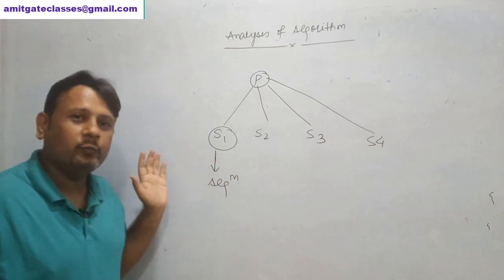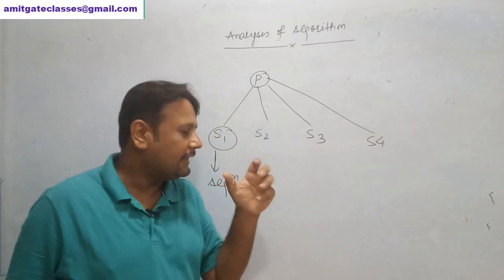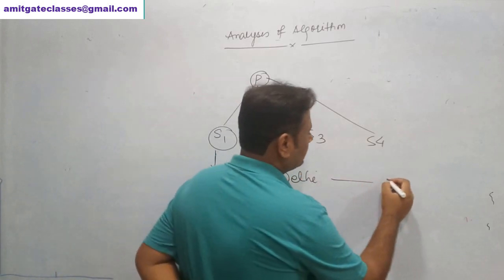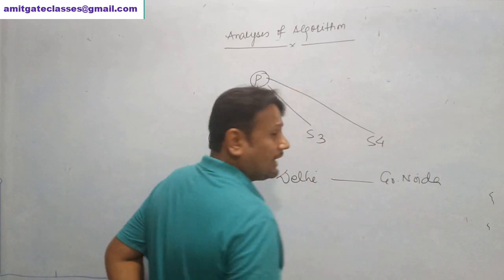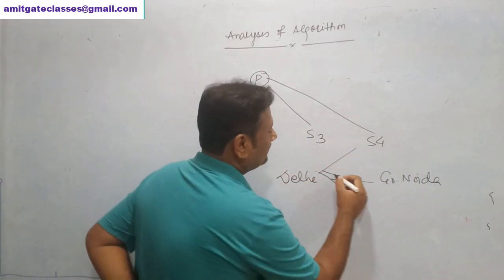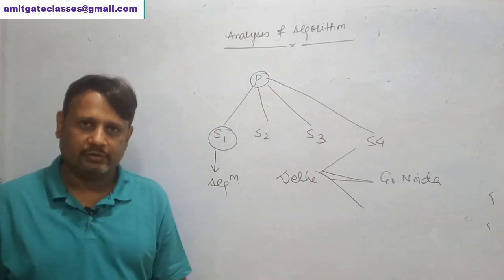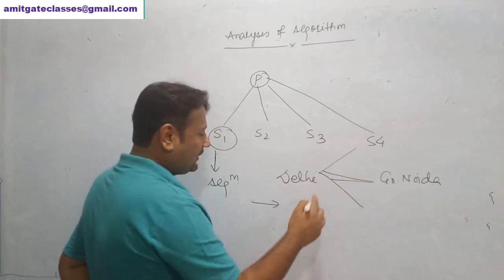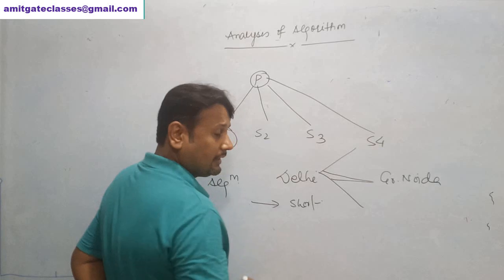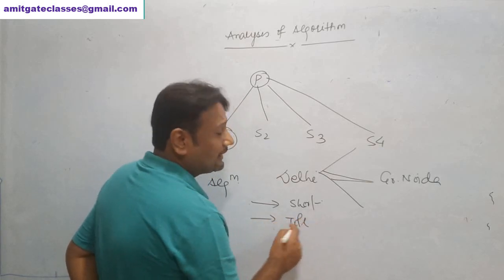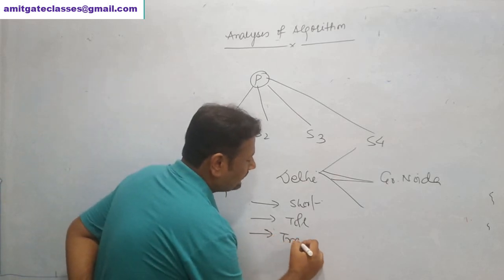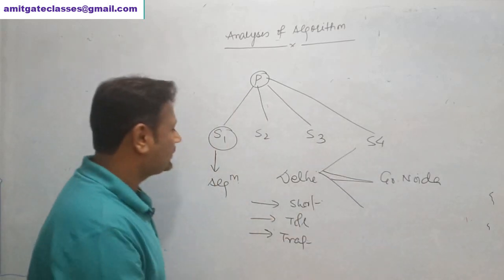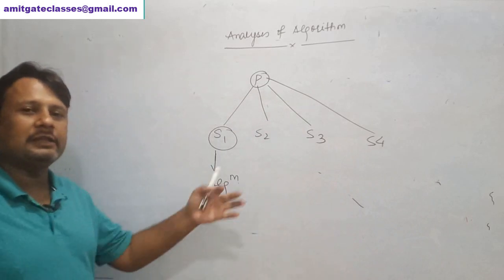If a problem is there and solutions are there, how do you choose which solution is good for you? Let me take an example: I am in Delhi and I need to travel to Greater Noida. There are three paths. Which path will you choose? You'll choose based on certain criteria — shortest time, no toll, traffic-free, etc. Based on certain attributes, we choose which path is suitable.